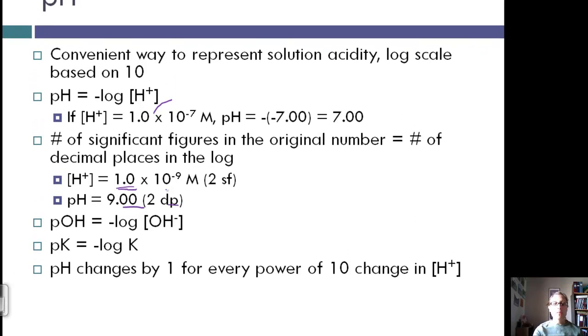The pH changes by 1 for every power of 10 change in H plus concentration because it's a log scale based on 10. This also means that because it's negative, as the pH decreases, concentration of H plus increases. So an increase in H plus will decrease our pH.